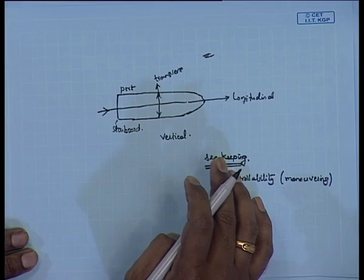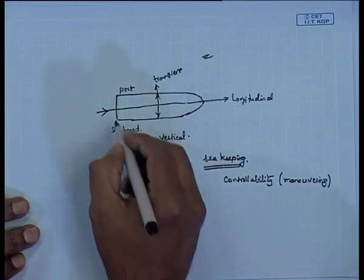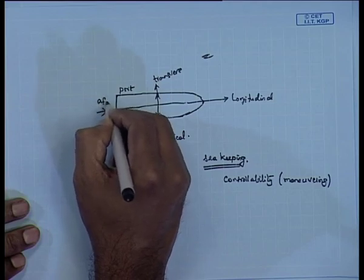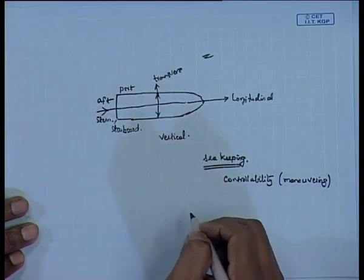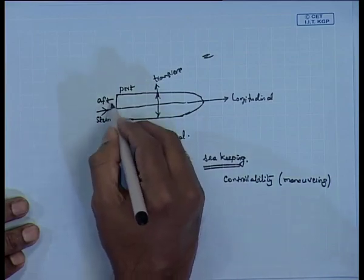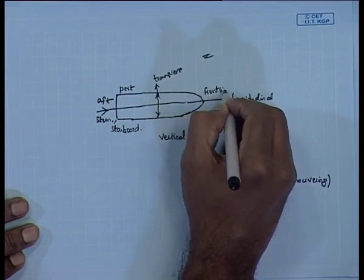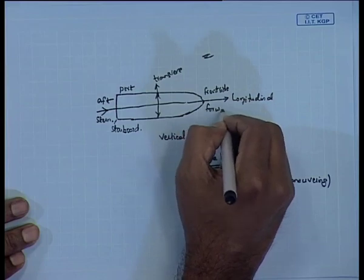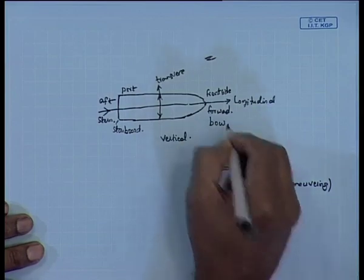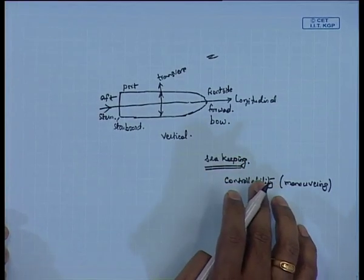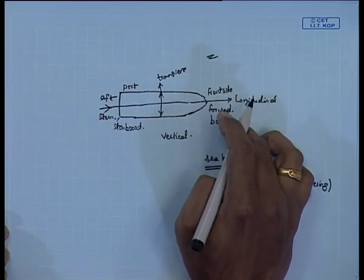Port and starboard sides are standard notations used throughout naval architecture. There are also terms like: the backside of the ship is known as aft, also known as the stern of the ship — aft and stern both represent the backside. Then on the front side, it is known as the forward side or the bow of the ship. So aft and stern represent the backside, and bow represents the front side of the ship.